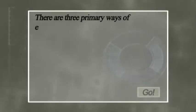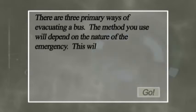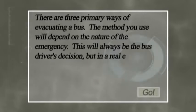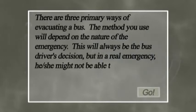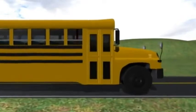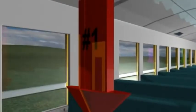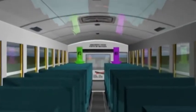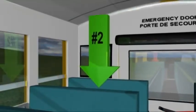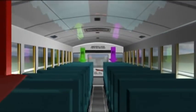There are three primary ways of evacuating a bus. The method you use will depend on the nature of the emergency. This will always be the bus driver's decision, but in a real emergency, he or she might not be able to help, and then you'll have to decide. The students occupying the seats closest to the doors will play a key role. Helper number one sits in the aisle seat closest to the front door next to the driver. Helpers two and three sit in the aisle seats closest to the rear emergency door. These positions remain the same regardless of the type of evacuation to be used.